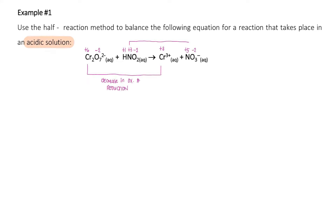The other element that has changed in oxidation number is nitrogen, which goes from positive three to positive five. There is an increase in the oxidation number, which tells us that the substance has undergone oxidation.